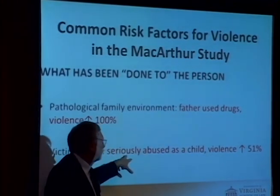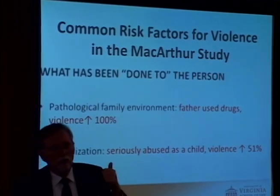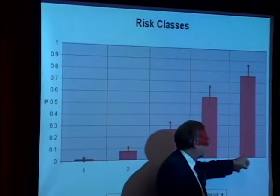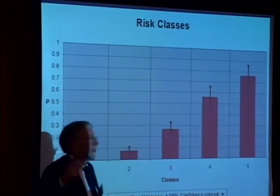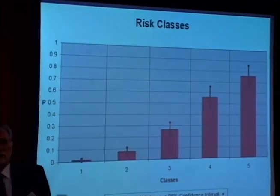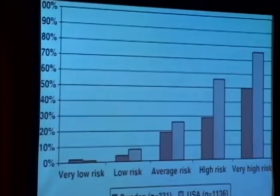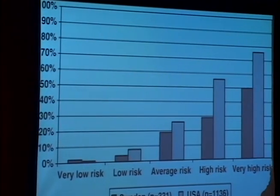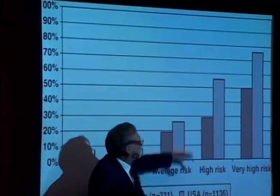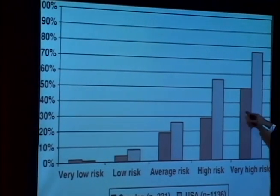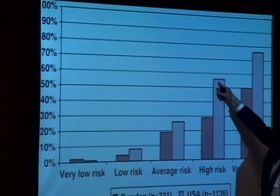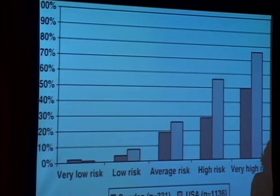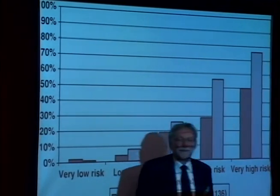Victimization: if before age 15 you were seriously physically abused as a child — severely enough to require a doctor or miss school — that increased your rates of being violent by 51%. Combining all these factors, we could place people in one of five groups with a 1%, 8%, 26%, 56%, or 76% chance of being violent in a 20-week period after discharge. A study published last year used this instrument in Sweden and found the ordinal ranking replicated, but the absolute rates were much lower — 50% for the highest-risk group versus 76% in the U.S. — because Sweden is simply a much safer place to live. Thank you.